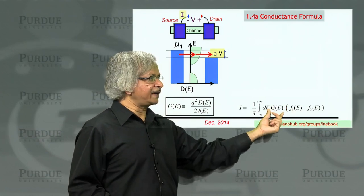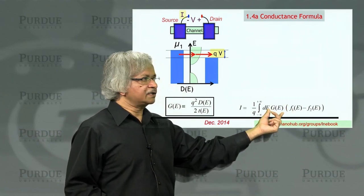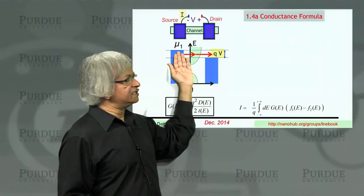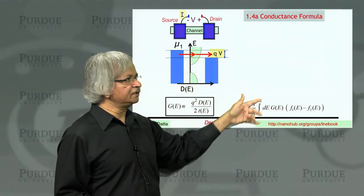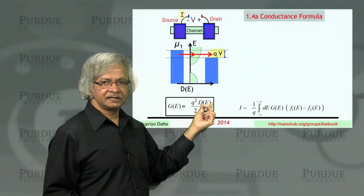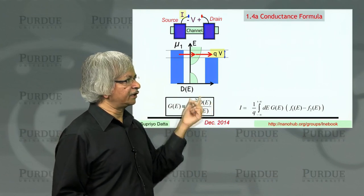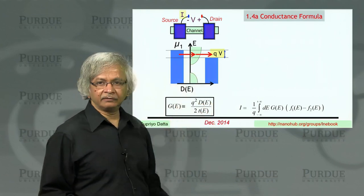And then there is this factor here, this conductance, which tells you how easily electrons can flow through the channel. That depends on the density of states and the time that it takes for an electron to get from left to right.